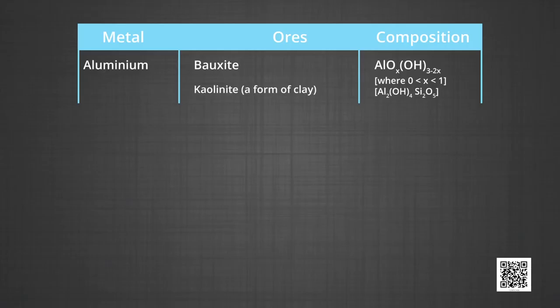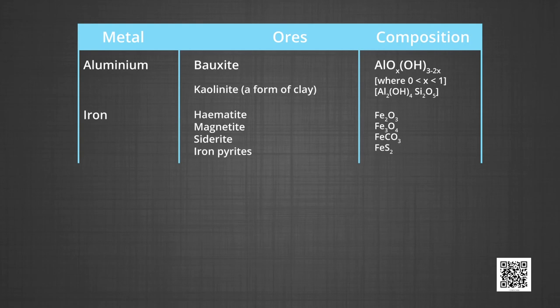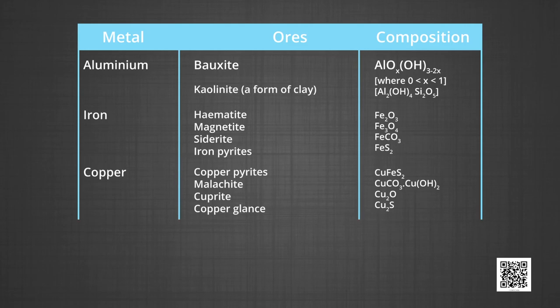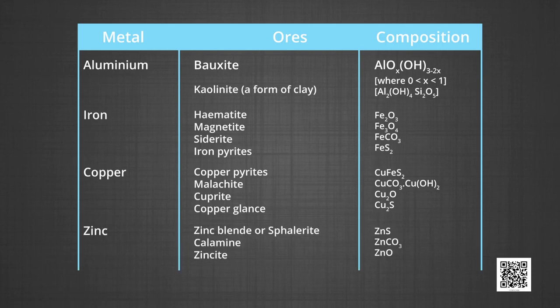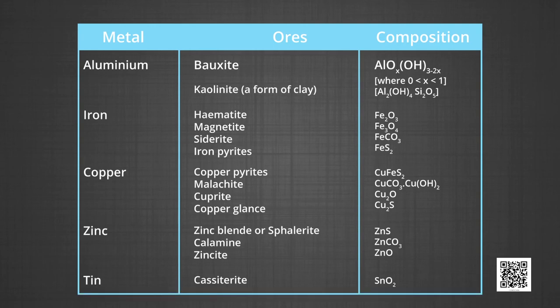As this decides on the economic viability of the process, the principal ores of some metals are: Aluminum ores are bauxite, which is a hydrated alumina, and kaolinite, a form of clay which is an aluminum hydroxide and silica complex. Principal iron ores are hematite, magnetite, siderite. Those of copper are copper pyrite, malachite, cuprite and copper glands. For zinc, it is zinc blende, calamine and zincite. For tin, it is cassiterite.